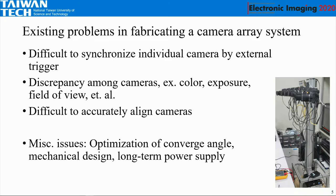The existing problems with this kind of device: it is difficult to synchronize multiple cameras because each camera has its own circuit and is not easy to control by external means. So we developed one circuit to trigger the cameras. Another important issue is the discrepancy among several cameras — they may have different color systems, different exposure values, and different fields of view. This needs to be handled by very accurate calibration. Also, building a camera rig makes it very difficult to align cameras precisely, so we need a software solution.